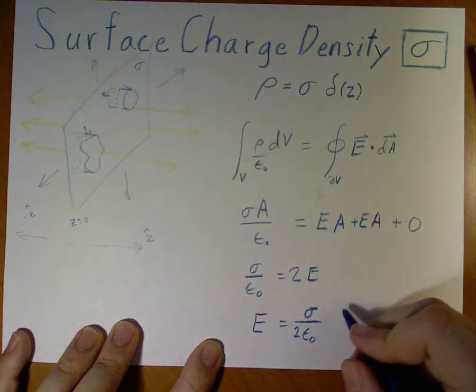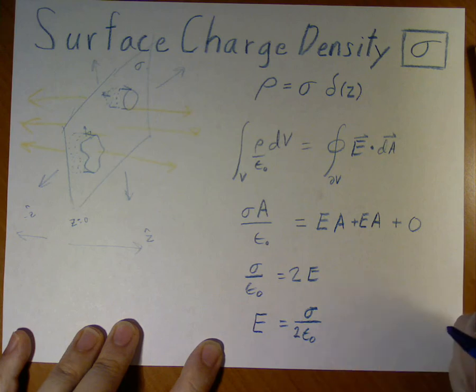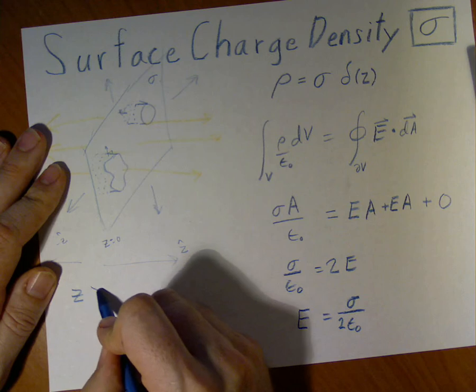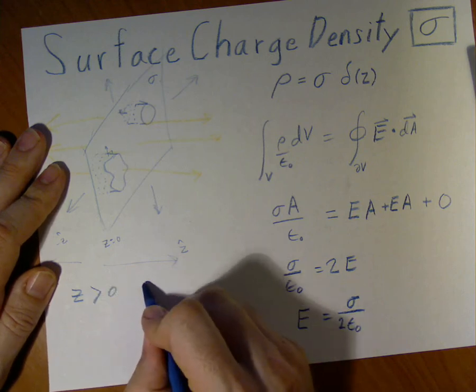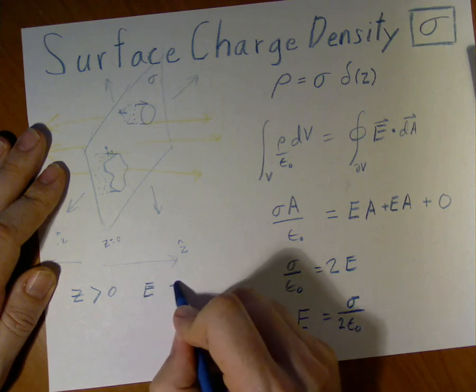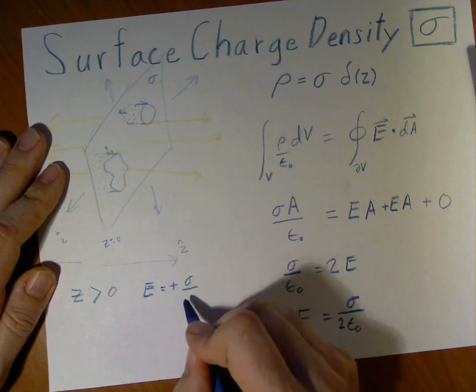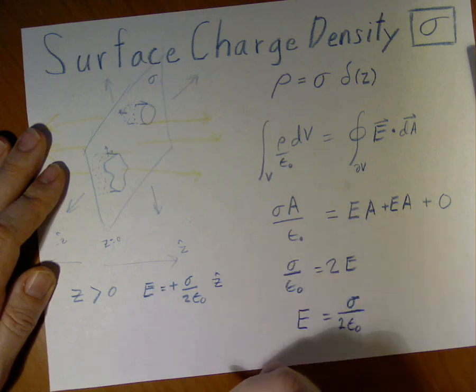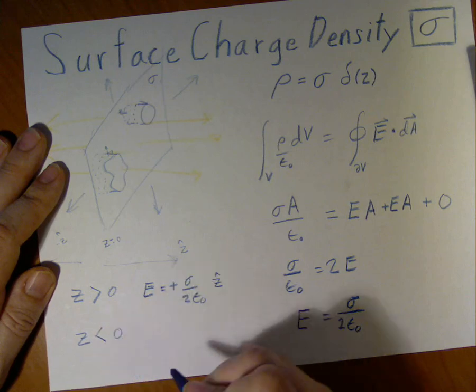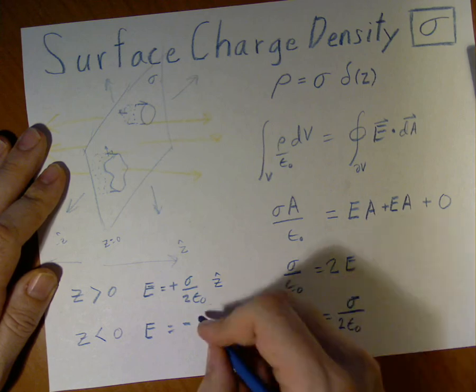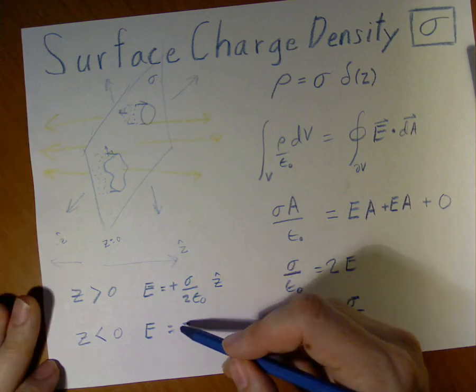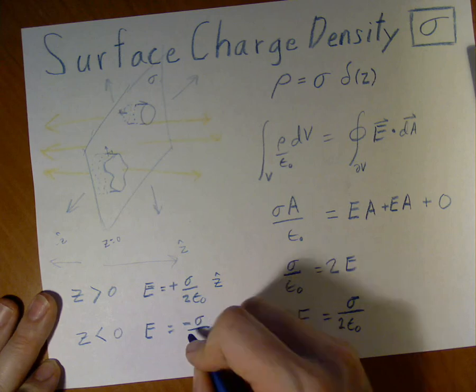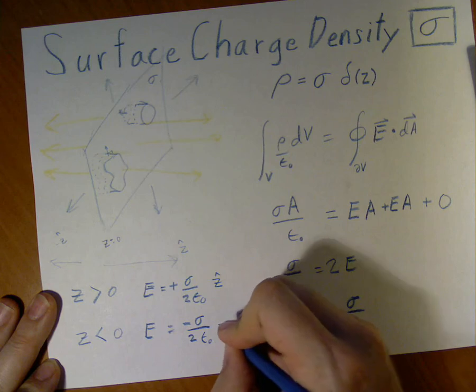Now, so our electric field will point in the... it has this magnitude. If z is greater than zero, our electric field will be positive, sigma over 2 epsilon naught z-hat. If z is less than zero, the electric field will be negative. All negative means is direction. Since this is a vector, all negative means that it's pointed that way. That's all that it means. It has quite the same magnitude.